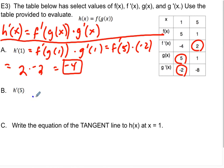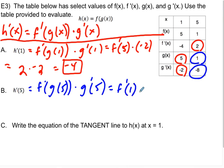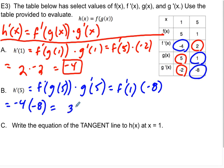For h prime of 5: it equals f prime of g of 5 times g prime of 5. g prime of 5 is negative 8 and g of 5 is 1, so this is f prime of 1 times negative 8. f prime of 1 is negative 4, so the answer is negative 4 times negative 8 equals 32.